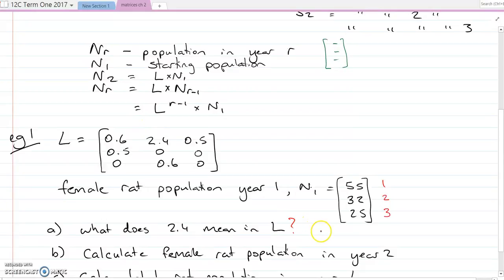First question: what does 2.4 mean in L? So that's the fecundity rate of two-year-olds. This is the number of female offspring each two-year-old female produces on average.